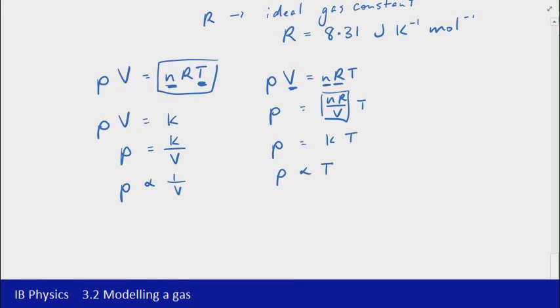And then finally, rewriting that again, PV equals NRT. If N is constant and P is constant, similarly we'd have V is equal to NR over P. So there's the constant terms being equal to T. So V is equal to KT, and therefore V is proportional to T.